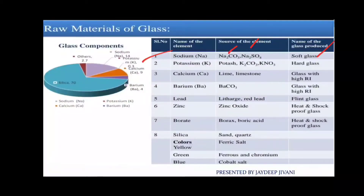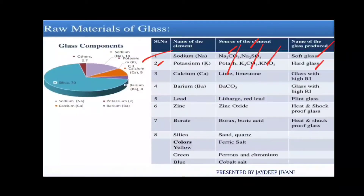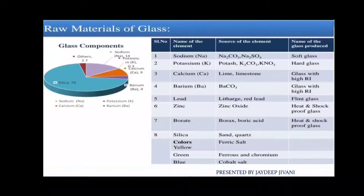Next is potassium. Potassium is sourced from K2CO3 and KNO3. Potassium is used for hard glass, while sodium is used for soft glass. So hard glass uses potassium and soft glass uses sodium.